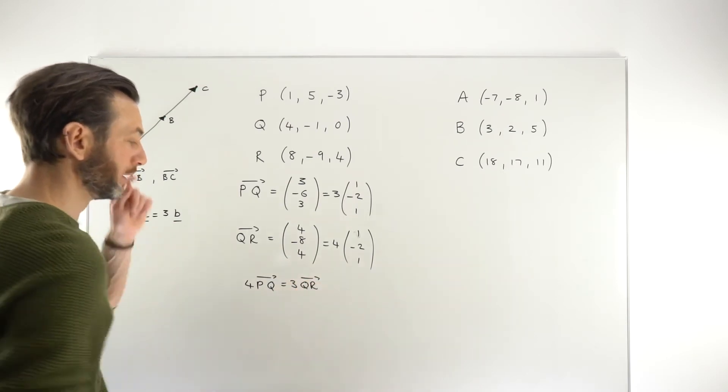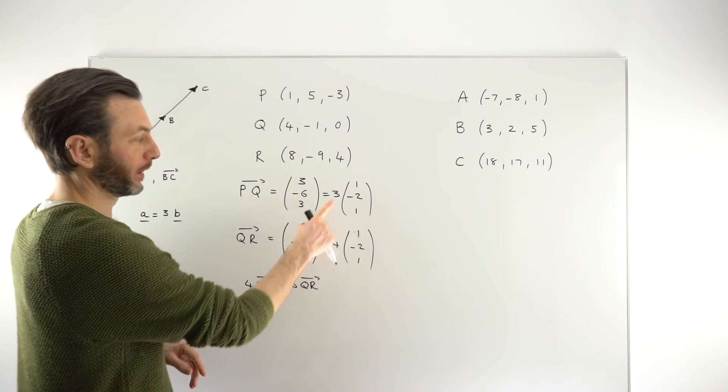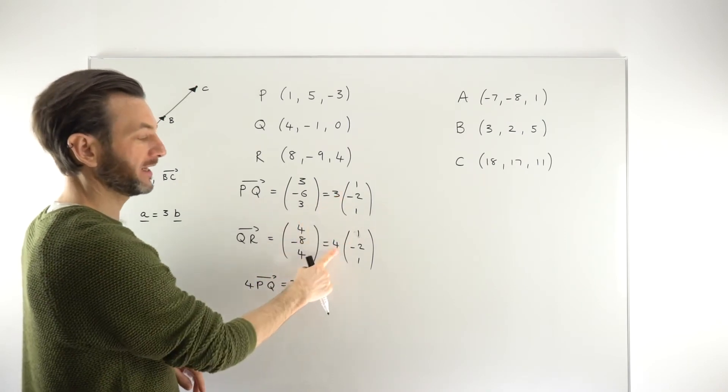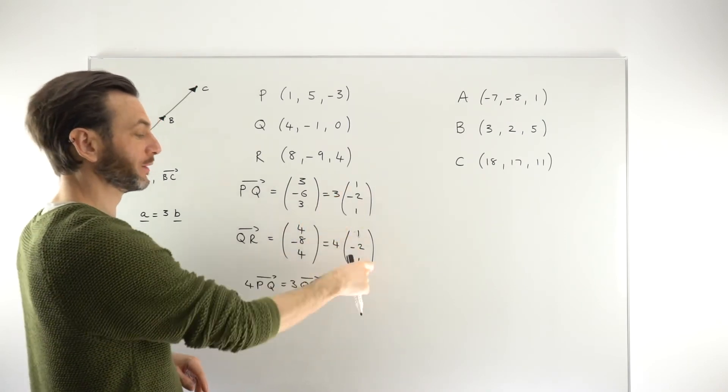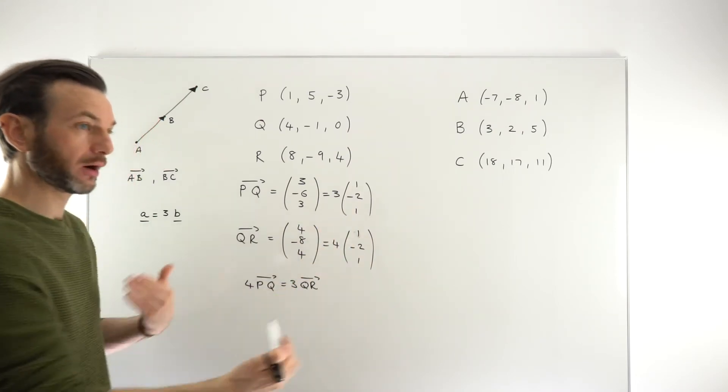So just check that yourself if you're not quite sure of why I'm getting that. I'm just basically saying that if you multiply that by 4, you would get 12 here, and you multiply that by 3, you would get 12 here, and then they would be the same. Then they would be equal. So this here is showing that they are a multiple of each other.